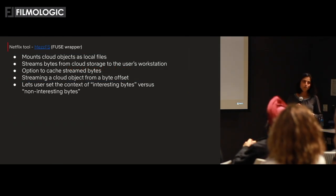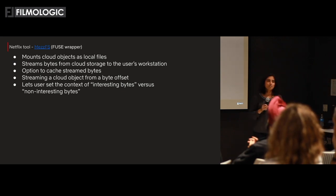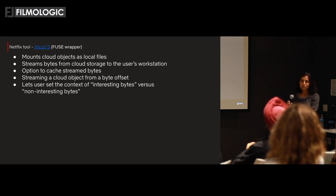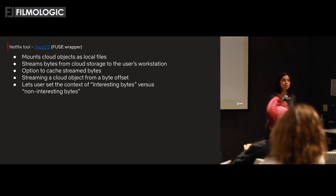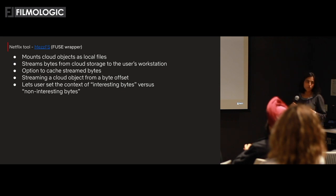Our solution is a tool called Mezafest — there's a blog post on Netflix's tech blog if you're interested, and if there's enough interest we can look into open-sourcing it. Mezafest can mount S3 objects as local files, so as an artist those files appear to be on your local disk. Behind the scenes, Mezafest is streaming bytes from our cloud storage — S3 in our case. It also caches streamed bytes on your desktop so you can resume from where you left off if you close your laptop and come back.